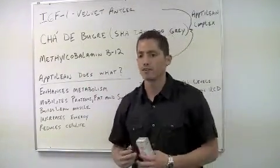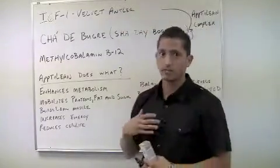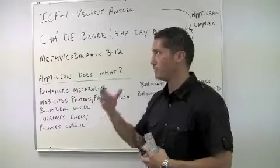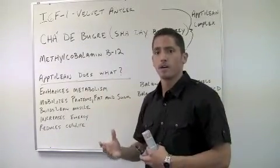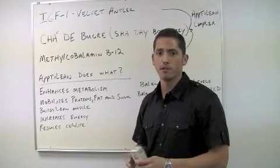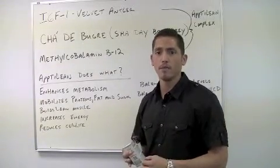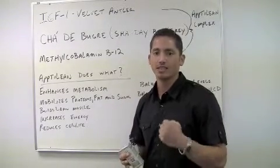So what we have is what this complex is called. It's called an Aptalene complex. And that's our proprietary complex and blend of these three powerful weight loss ingredients. So what we've done is we've combined this proprietary blend. We've trademarked it as the name Aptalene because it suppresses the appetite and causes your body to naturally lean up.